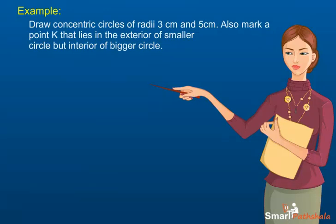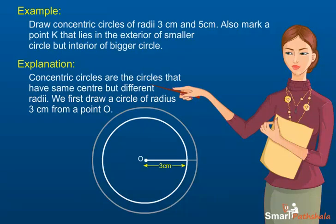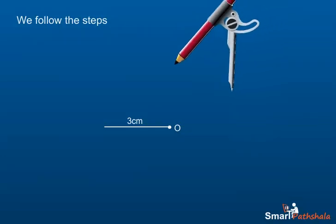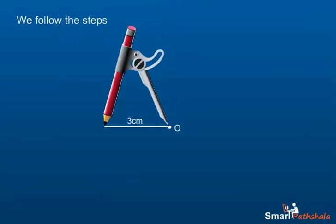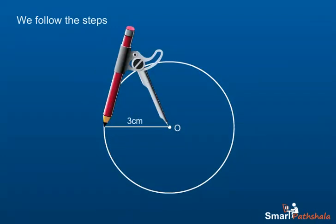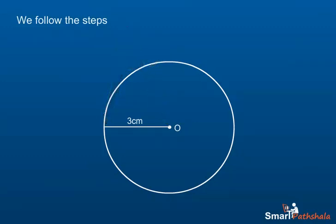Example: Draw concentric circles of radius 3 cm and 5 cm. Also mark a point K that lies in the exterior of the smaller circle but interior of the bigger circle. Explanation: Concentric circles are circles that have the same center but different radii. We first draw a circle of radius 3 cm from a point O. We first make a line segment of 3 cm and mark one end of it as O. Open the compasses for 3 cm, keep the pointed end on O, and turn around the compasses to draw the circle.